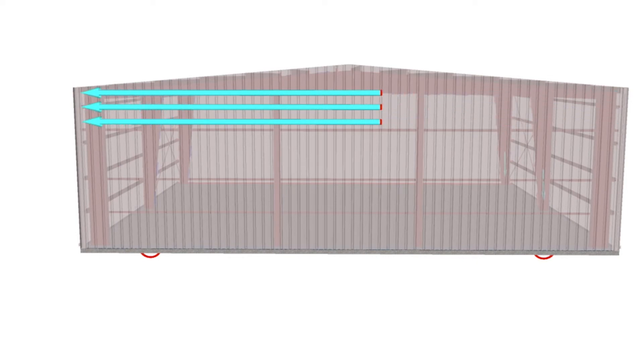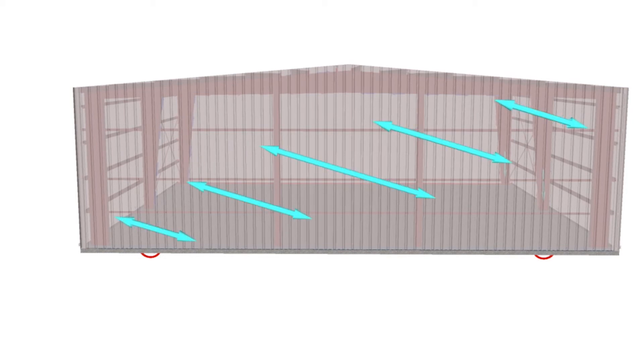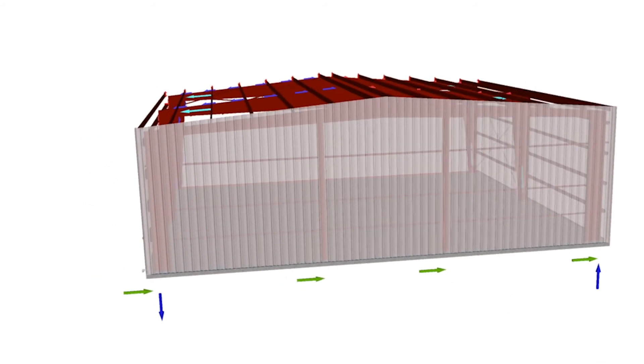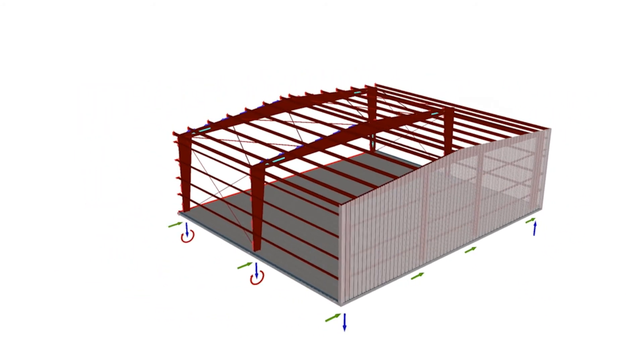Therefore, the end wall acts as a diaphragm to transmit the transverse lateral loads. Have you ever put together a bookcase kit? It's pretty unstable until you attach the back panel. That back panel is acting as a diaphragm, just as the end wall cladding does.